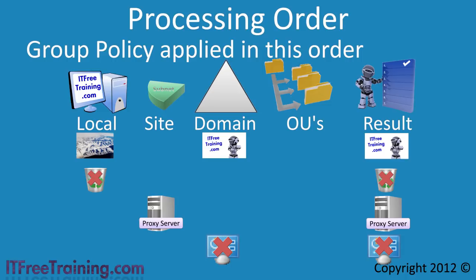In this network, some computers have been configured to test out new software and thus require the control panel. In order to do this, another group policy is created and applied to a testing OU. Since the group policy enables the control panel, notice in the results the control panel has been enabled again. At each stage, settings are either added or replaced in the resulting group policy settings. This allows you to customize group policy to meet the needs of your organization.